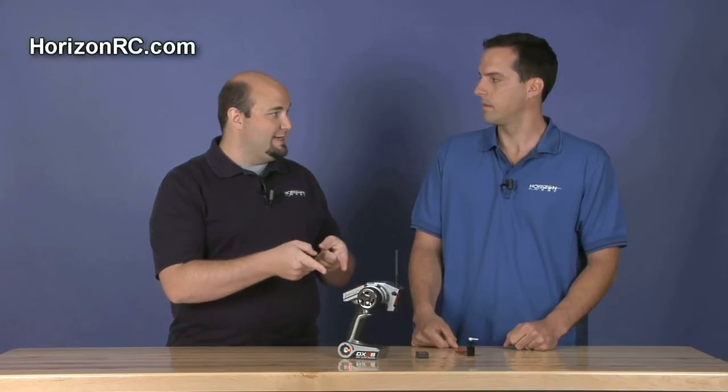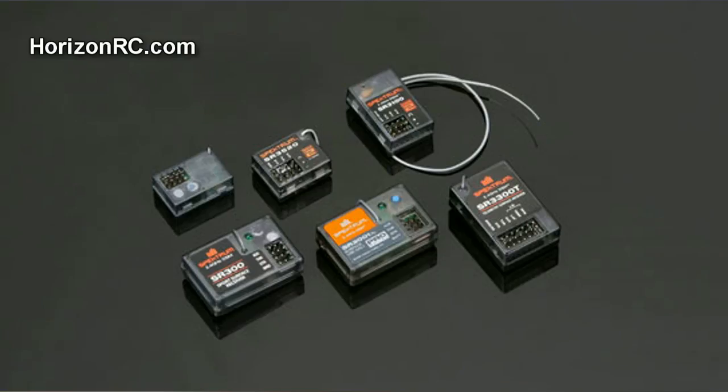So the 3100 and the 3520 will work with the DX2S? That's right. All of our surface receivers work with this transmitter. So you can use this transmitter on the 3100, the 3520 which are DSM2 receivers, the MR3000, the marine receiver,